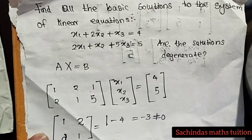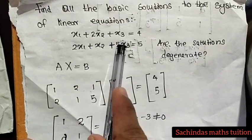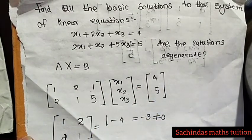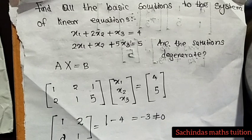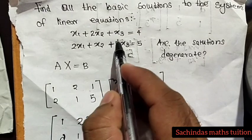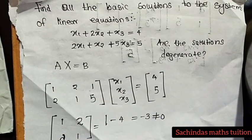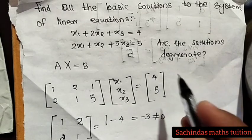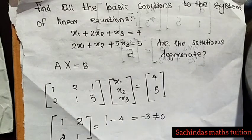What is the basic solution? We have variables x1, x2, x3. If the non-basis variables are set to zero and we solve, we get a basic solution. If no basic variable is zero, it is a non-degenerate solution.